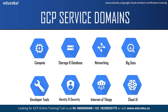Google also provides a free trial to all new customers, giving $300 in free credit to fully explore and assess Google Cloud Platform. You can use this $300 to try various Google Cloud products, you won't be charged until you choose to upgrade, and it is valid for 90 days. GCP also has an always-free tier where all Google Cloud customers can use selected products like Compute Engine, Cloud Storage, and BigQuery free of charge within the specified monthly usage limits.